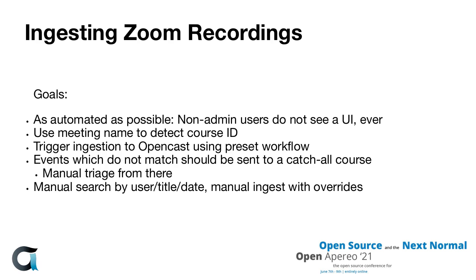Once a meeting finishes, the system automatically triggers ingestion to Opencast using a preset workflow. Events not matching that filter get sent to a catch-all course and manually triaged — there's always somebody who fat-fingers it or didn't name their class correctly, and that's where the admin person comes in. There also needed to be a manual search by some combination of user, title, and date, and the ability to manually trigger ingests. With that came the ability to override metadata, such as changing the name of the faculty member.